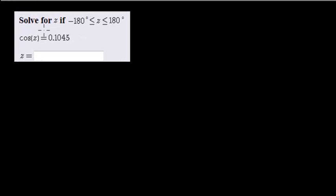Okay, so this is a typical example where we're actually given an equation, and we're asked to solve for z. They give us some parameters that z must be a number between negative 180 degrees and 180 degrees, and we need to type in the answer there.